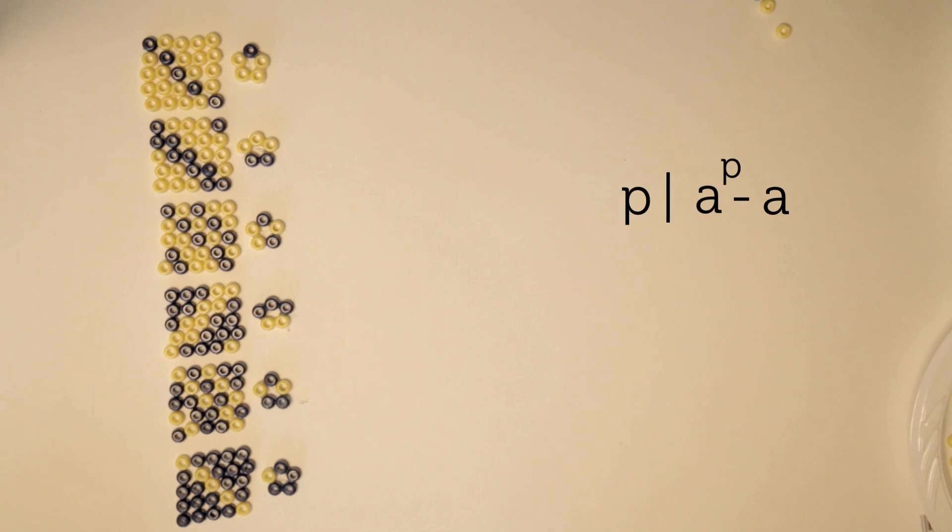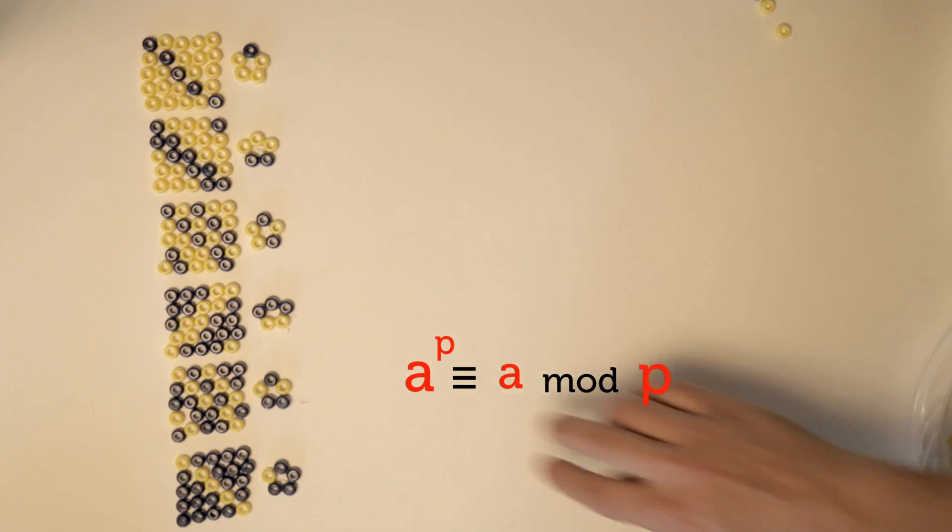We can express this statement in modular arithmetic too. Think of it. If you divide A to the power of P by P, you will be left with a remainder A. So we can write this as A to the power of P is congruent to A mod P. And here we have stumbled onto one of the fundamental results in number theory, merely by playing with beads.